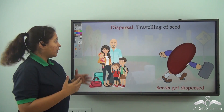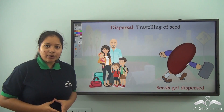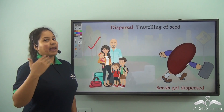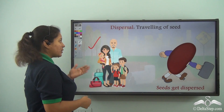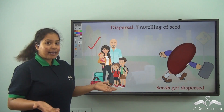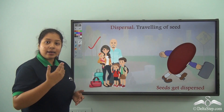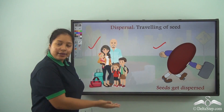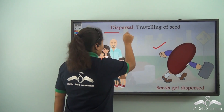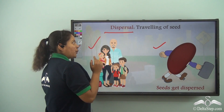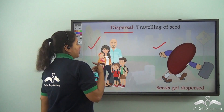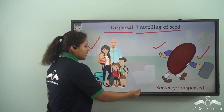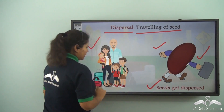So what happens when it is very, very crowded? Well, the family moves a little far and then gets settled. Similarly, as I told you, the seeds of the plants as well, they travel. And what is their travelling known as? It's known as dispersal. So what is dispersal? Dispersal means travelling of seeds. Seeds get dispersed.